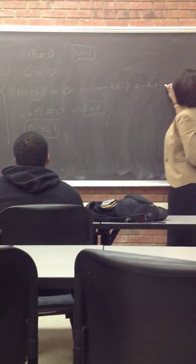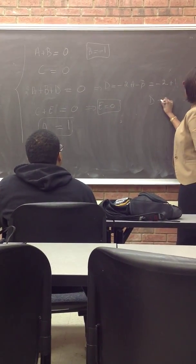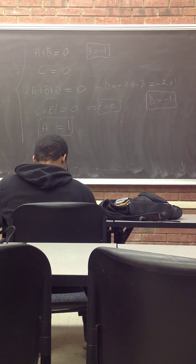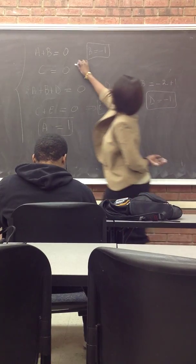And finally, c plus e is for the x, but there is no x on the left side. And the constant is a, and here the constant is 1.